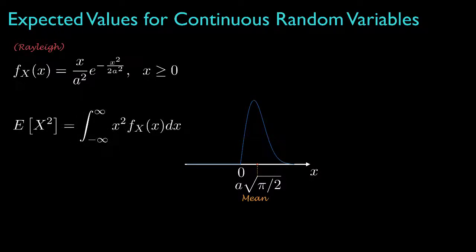Another characterization for a random variable is its second moment, which is the average of the square of the random variable. As we did with discrete random variables, we'll use the first and second moments to define the variance and the standard deviation for a random variable, and among all characterizations, the first and second moments along with the corresponding variance and standard deviation will be the most important.